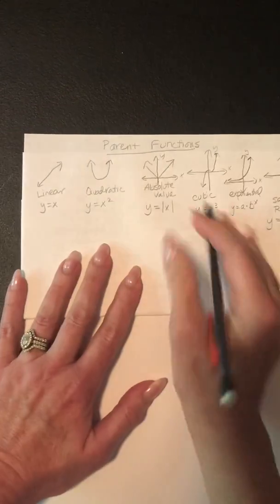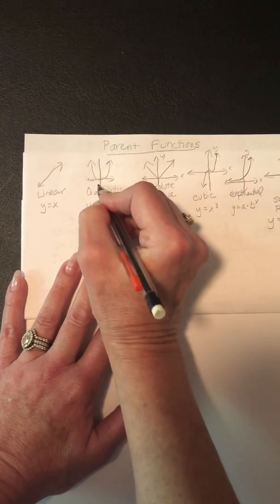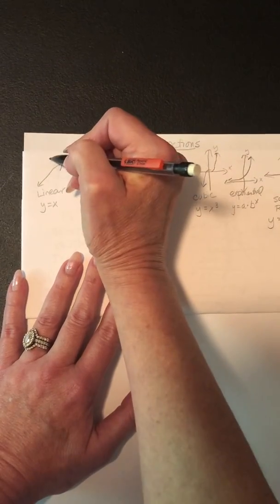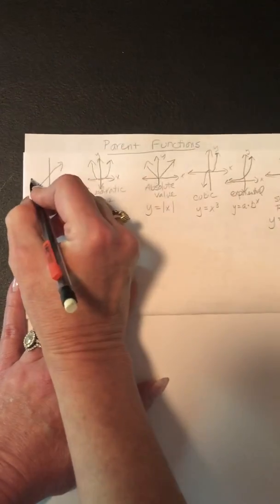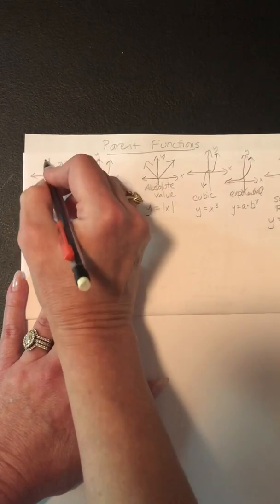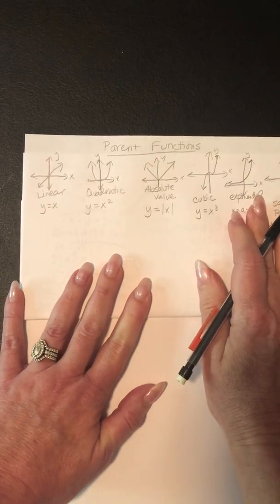And then over here, in the parabola, the vertex again is at zero, zero. And x and y. And then in the linear, it goes through the origin. And then x, and then y. So those are the parent functions.